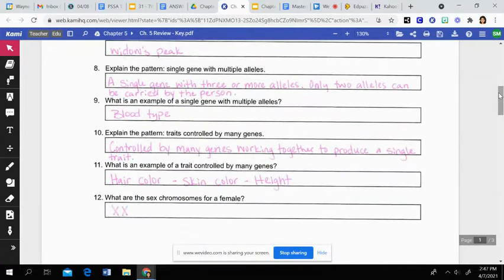Then the pattern of a single gene with multiple alleles. This is when there are three or more alleles for that gene, but a person can only have two of those alleles, but there's more combinations. So an example of this is blood type where we have different blood types. We have A, B, O, or even AB. There's different combinations, but a person can only have those two alleles.